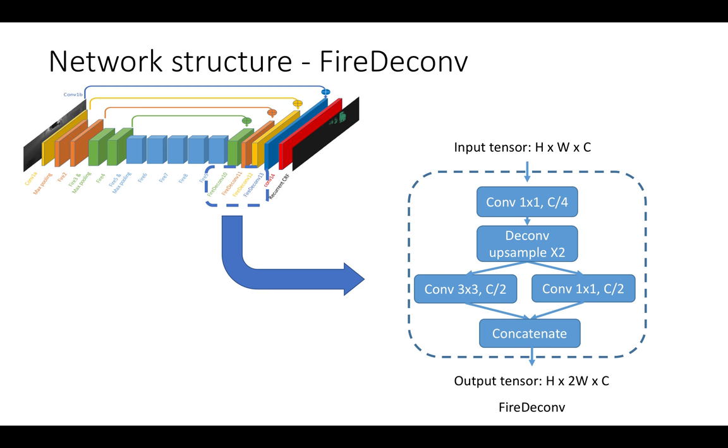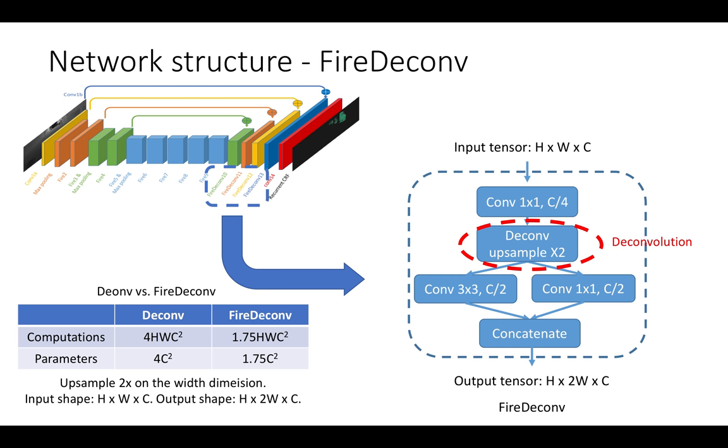To upsample, we use the FIRE deconv. To the right, we again have our squeeze and expand layers. Here, we introduce a deconv layer in between the two top levels to upsample our inputs. Again, we see drastic reductions in both the number of parameters and units of computation.